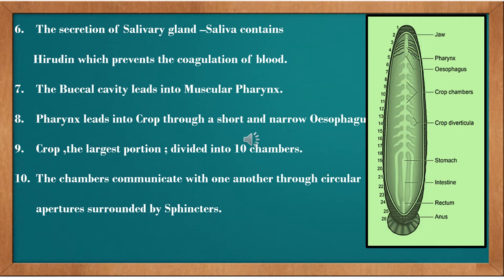Following the buccal cavity is the pharynx — a muscular pharynx. The pharynx leads into the crop through a short and narrow esophagus.